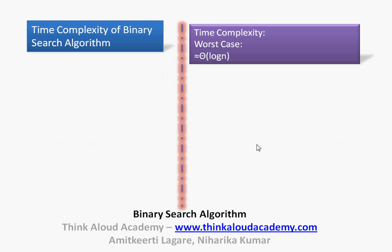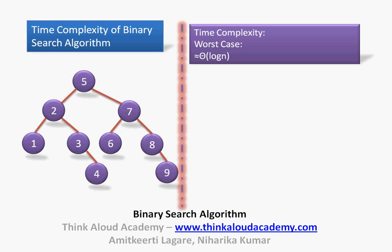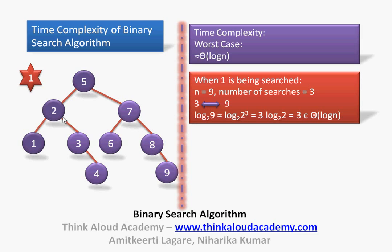Now let us analyze the time complexity of the binary search algorithm. The time complexity in the worst case is Θ(log n). To understand this, we represent the elements as a tree. When searching for 1, we searched with 5, then 2, then 1 — that is 3 searches total. Out of 9 elements, we needed only 3 searches. We need a formula connecting the number of searches (3) to the total number of elements (9).